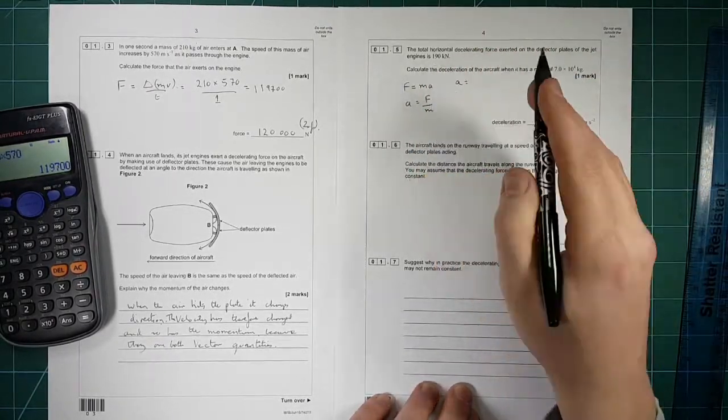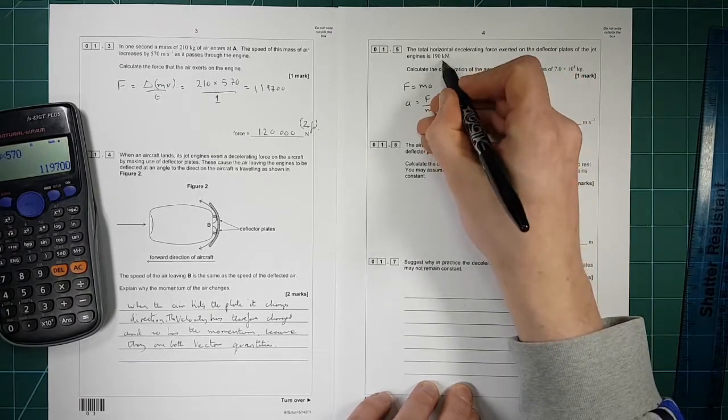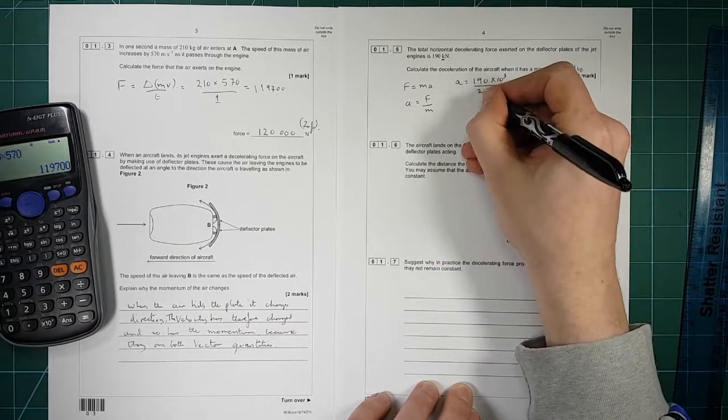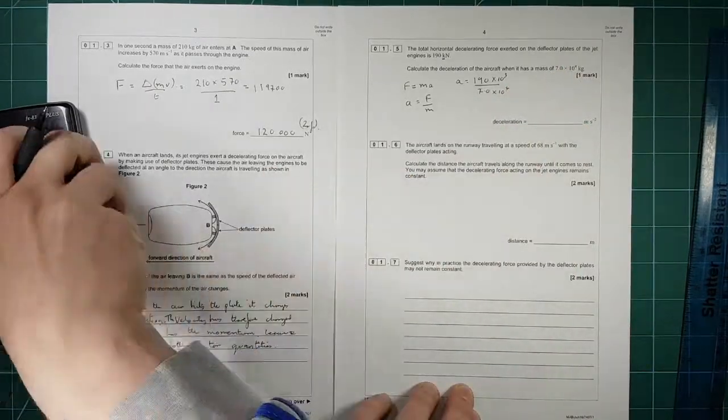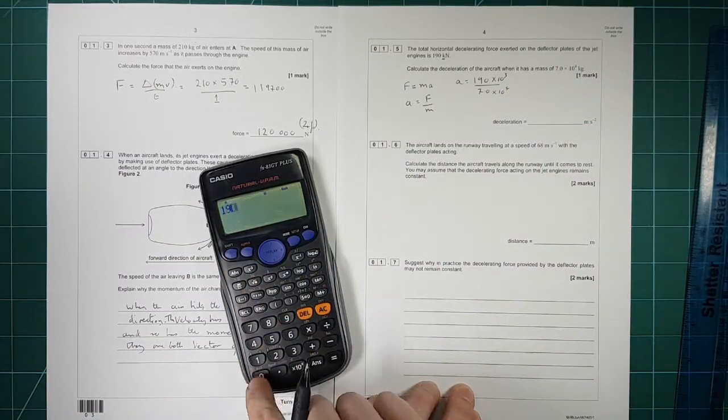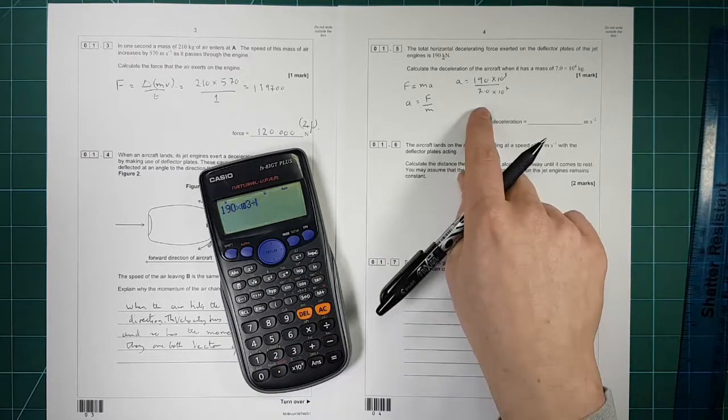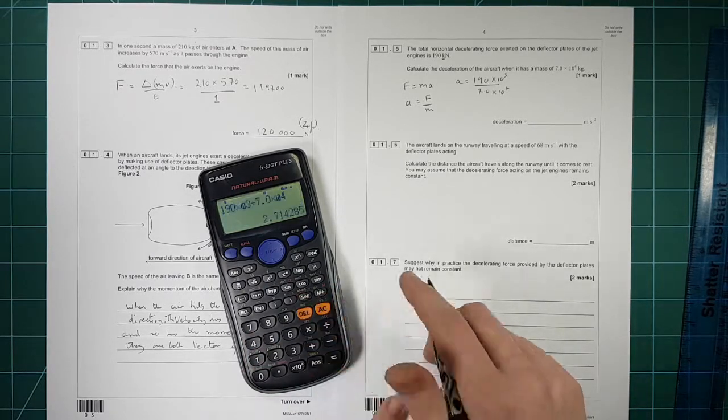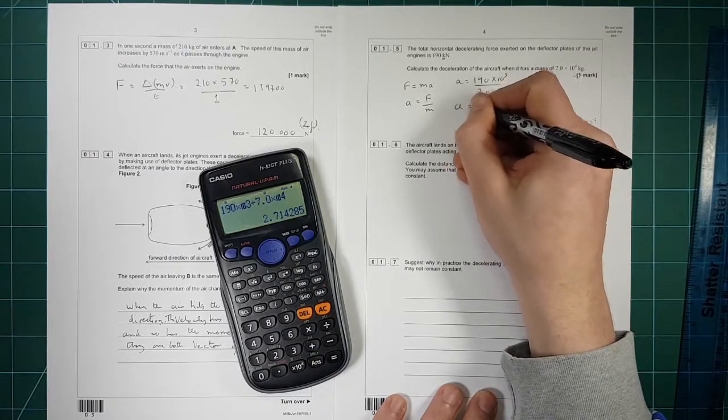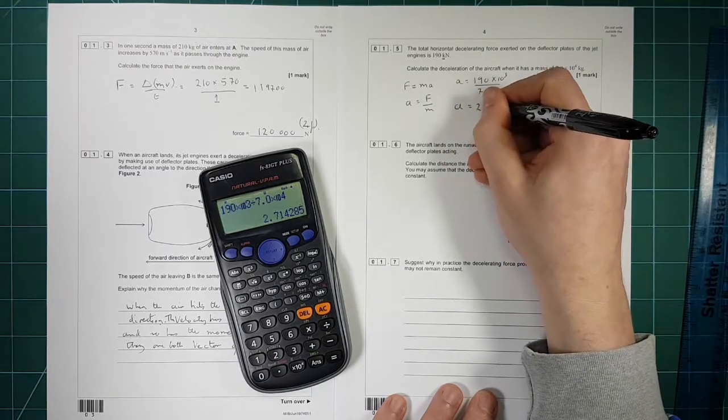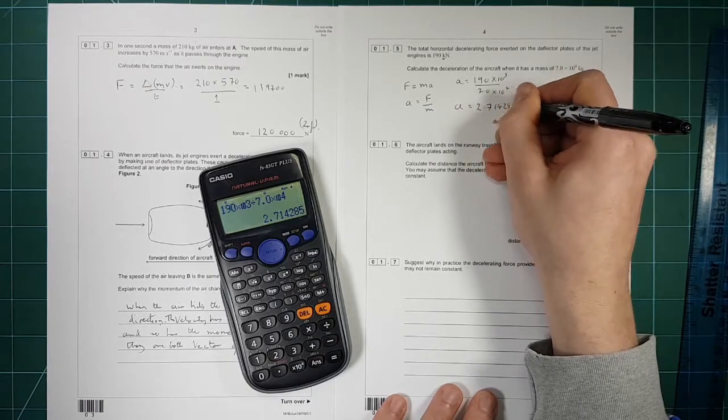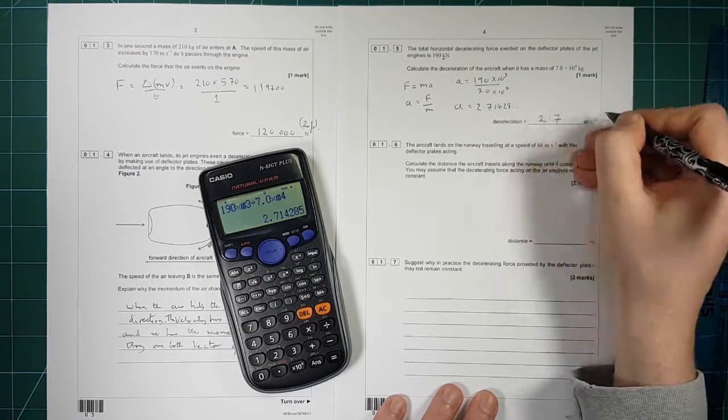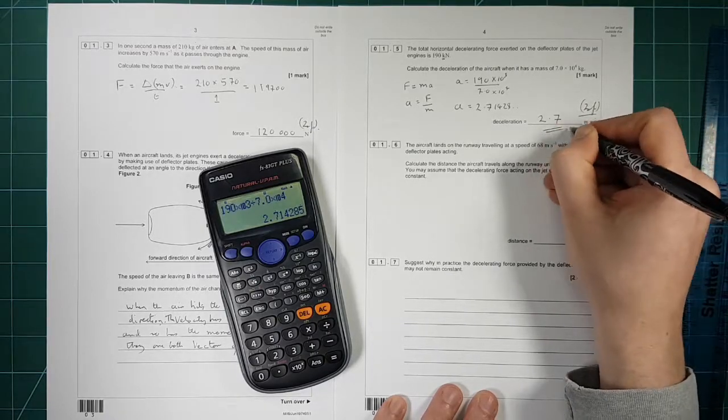So let's put that in the calculator. And we get A is equal to 2.71428 dot dot dot. So that's two sig figs. That's two sig figs. Alright this is two sig figs as well. There we go.